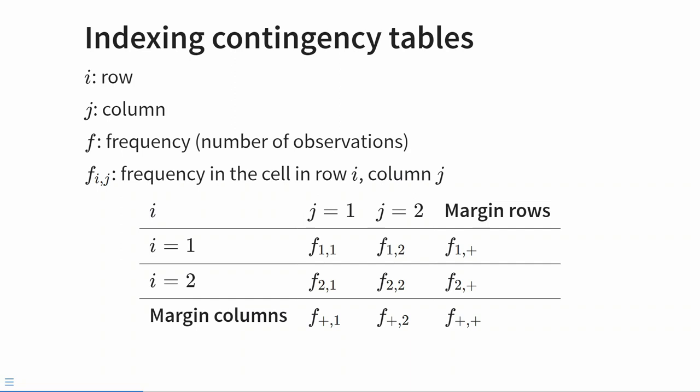What you see on the screen is an idealized contingency table with two discrete variables — one represented by the rows and one by the columns — giving four potential combinations of values. We can index this table by row using the index i and by column using j. So if I want you to look at the second row and second column, I would say look at the cell where i equals 2 and j equals 2. In that cell we find f sub i,j — the frequency in row i and column j, so in this case f sub 2,2.